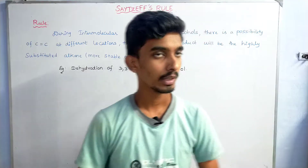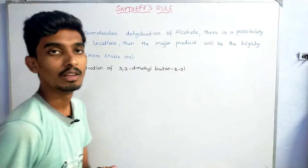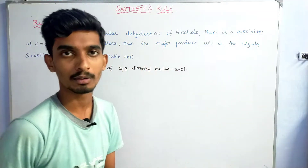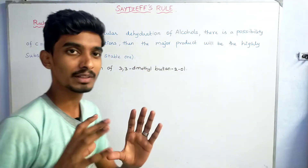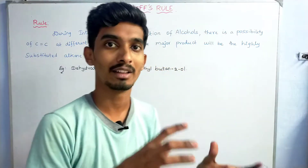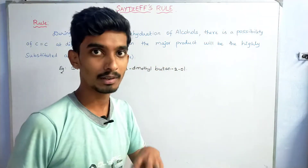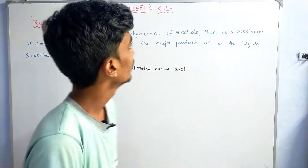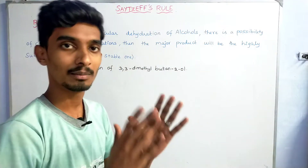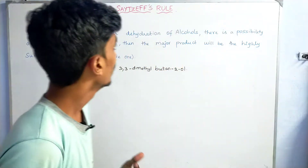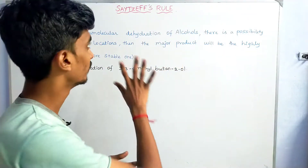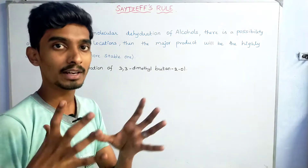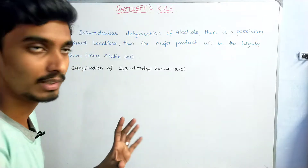Hi everyone, in this video we are going to see about Saytzeff's Rule. This is a very important question in this chapter. If you look at the reaction in the book, you might see a good reaction mechanism. But if you look at the question on sites of rule, it's not about mechanism or product formation. It looks complicated in the book, but it's actually very easy.